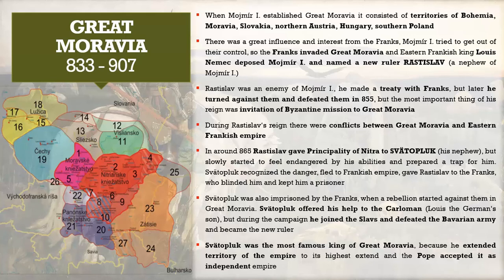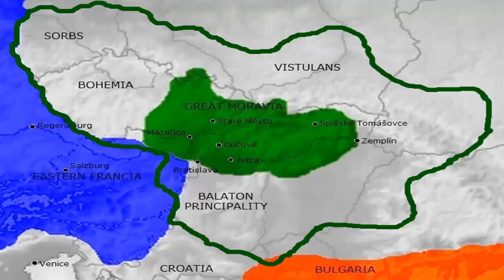Please look at the map when you study — it's a great help. At its biggest extent, Great Moravia included the Serbs, Bohemia, Vistulans, the Sorbs, and the Balaton Principality. The green area in the middle is the very center — mostly modern-day Slovakia and Moravia. The blue area to the east is the Eastern Frankish Empire, and the orange area at the bottom is Bulgaria.